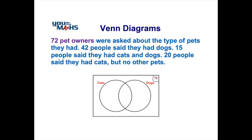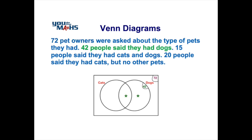Now we have 42 people who said that they own dogs. We're going to put that 42 inside the dog circle. The reason is that the 42 represents where those people belong — they could be cat owners as well, or they might be people who just own a dog.